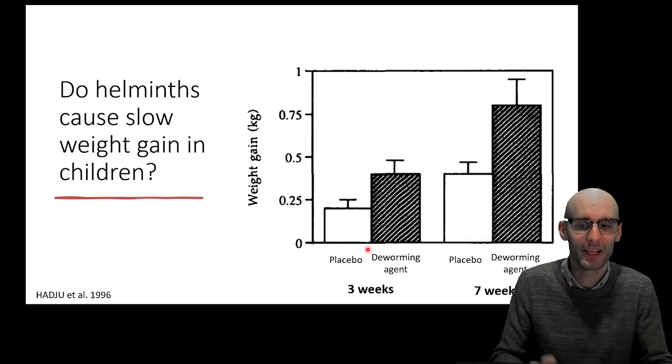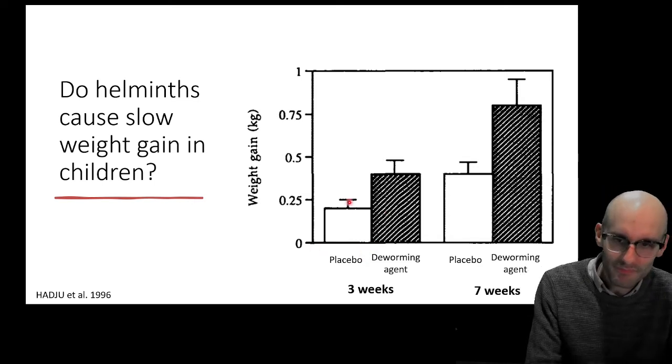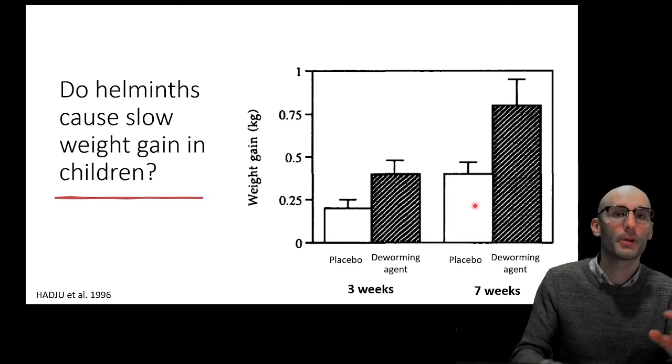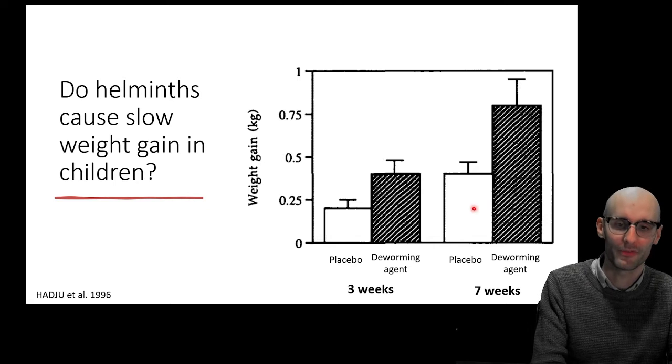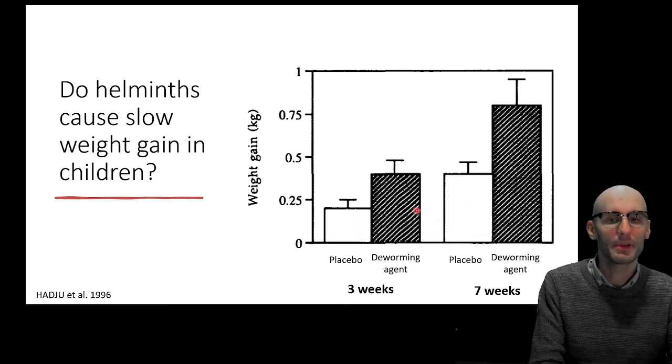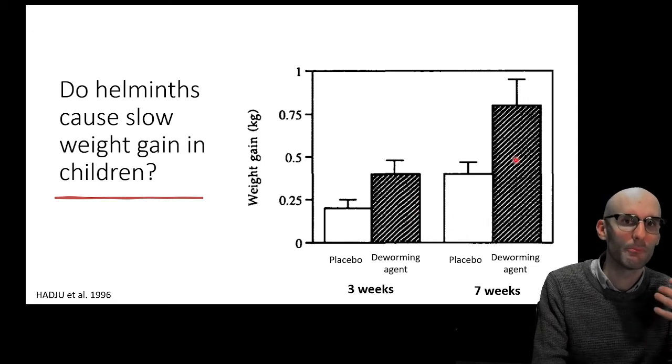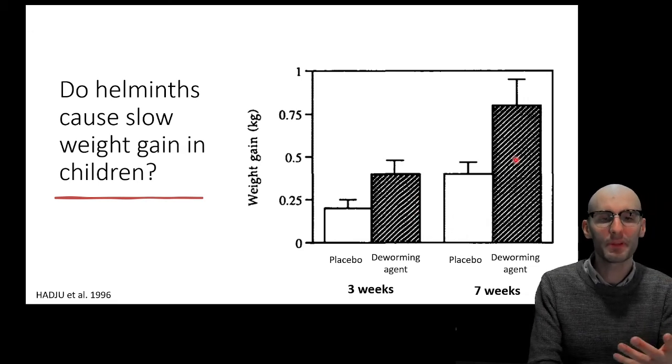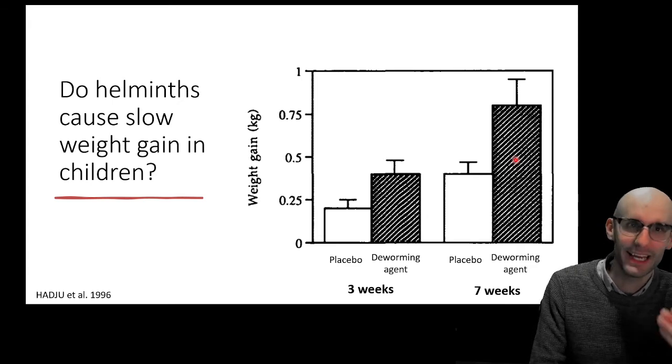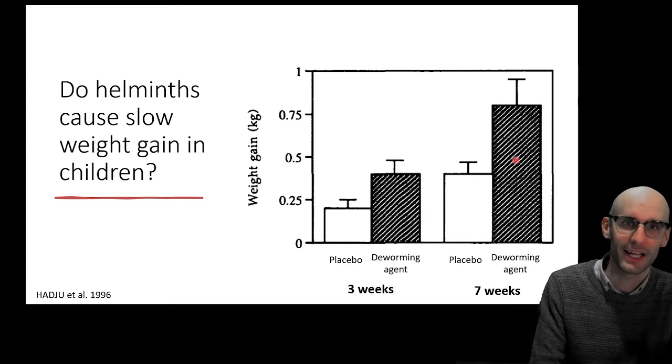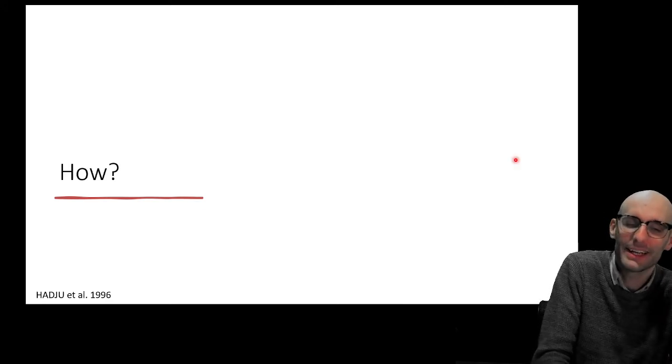The placebo group, because they're being looked after as part of a clinical trial, did gain weight over 3 to 7 weeks here in the white graphs. But the children that had the deworming agent gained significantly more weight. You'll probably think, but Jack you just told me that they don't steal many nutrients, they don't steal a lot of calories. So what is causing this difference? How is this effect coming in?